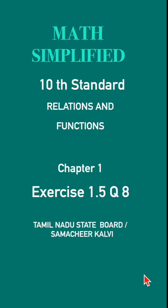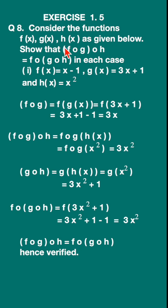Exercise 1.5, question 8. Click here for the full exercise. Consider the functions f(x), g(x), h(x) as given below. Show that (f∘g)∘h is equal to f∘(g∘h) in each case.